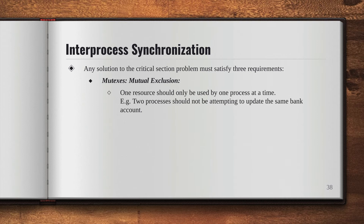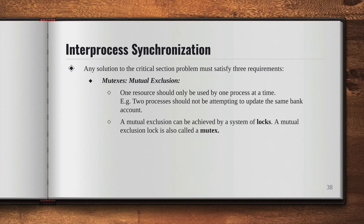While one process is updating your bank account in the system, another process should wait and let it finish updating. It can do its work after the first process has finished its execution. Now, mutual exclusion can be achieved by a system of locks. A lock is a software mechanism that is implemented in user mode, so no support is required from the operating system. A mutual exclusion lock is also called a mutex.